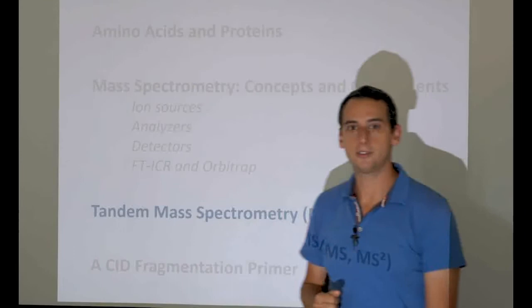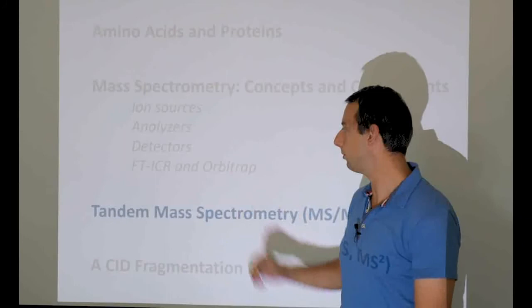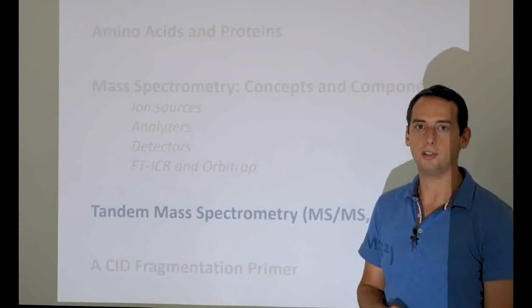So with that we come to the end of the special cases: the Fourier transform ion cyclotron resonance instrument and the Orbitrap. Our next lecture will be tandem mass spectrometry and how that works in the instrument. See you then, bye bye.